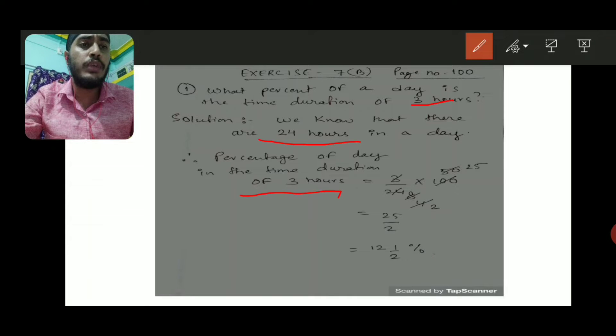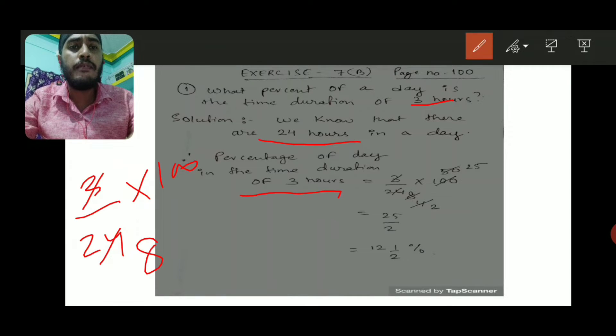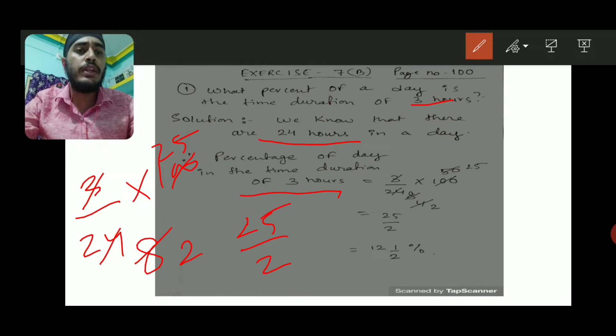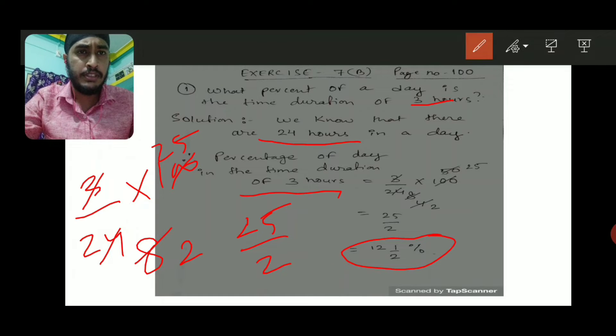So the percentage of day in the time duration of 3 hours will be 3 by 24 into 100. So 3 eights are 24, then again with 4, 4 twos are 8, and 4 twenty-fives are 100. So we got 25 by 2, and when we divide this we'll get this in mixed fraction, that is 12 and 1 by 2 percent.